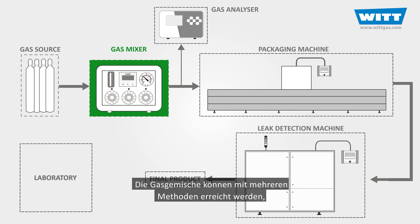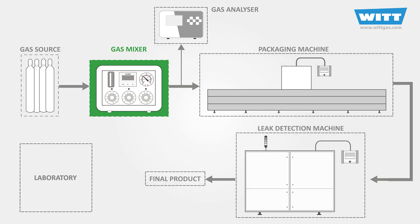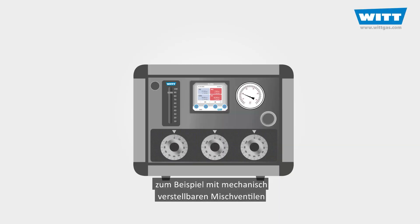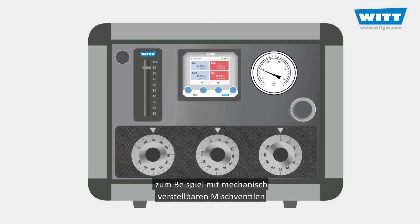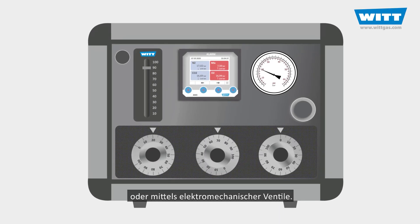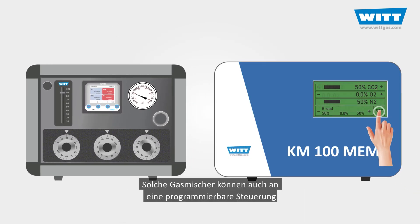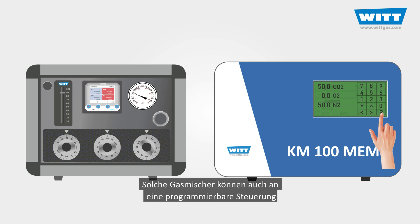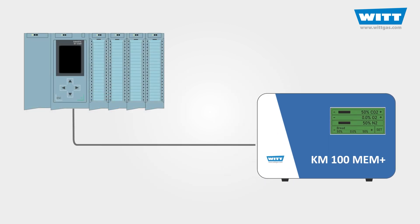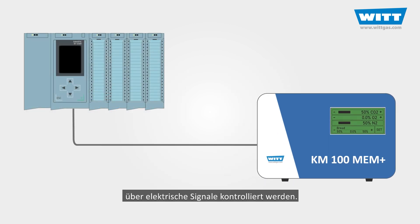To achieve this, we can adjust the gas mix percentage using different methods — for example, using mechanical dials on the mixer, or using electromechanical mixing valves. As you can see, these types of mixers can be connected to a programmable logic controller, or PLC, so they can be controlled via electrical signals.